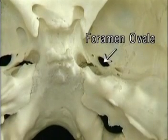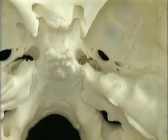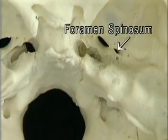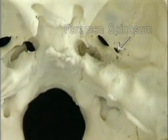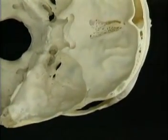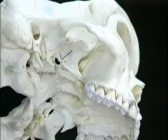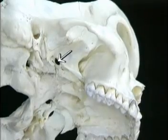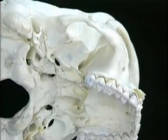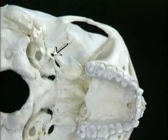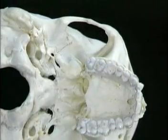The two openings that pass downward are the foramen ovale, for the mandibular branch of the trigeminal nerve, and just behind and lateral to it, the foramen spinosum, for the middle meningeal artery. To see where those two come out, we'll go round to the underside. Here's the foramen ovale, just behind the lateral pterygoid plate. Here's the foramen spinosum, just behind and lateral to the foramen ovale.